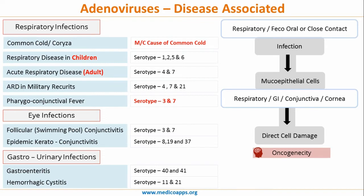One of the most important points is oncogenicity. Serotypes 12 and 15 have been found to cause sarcomas in baby hamsters, but to date there is no evidence of any oncogenic activity in humans. This is a very important point, and repeated exam questions have been asked on the fact that adenovirus has no evidence of oncogenicity in humans.